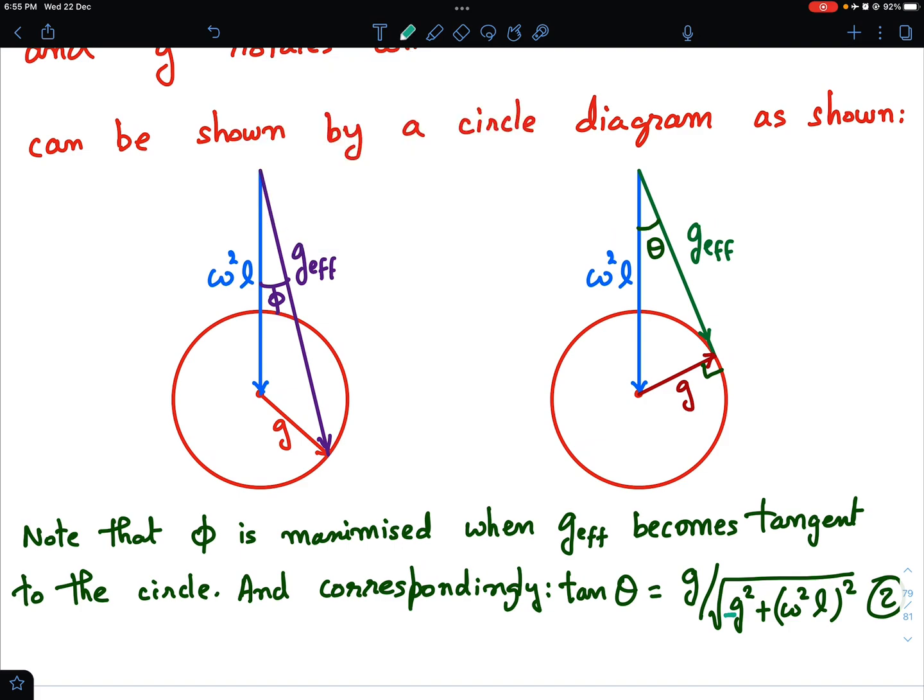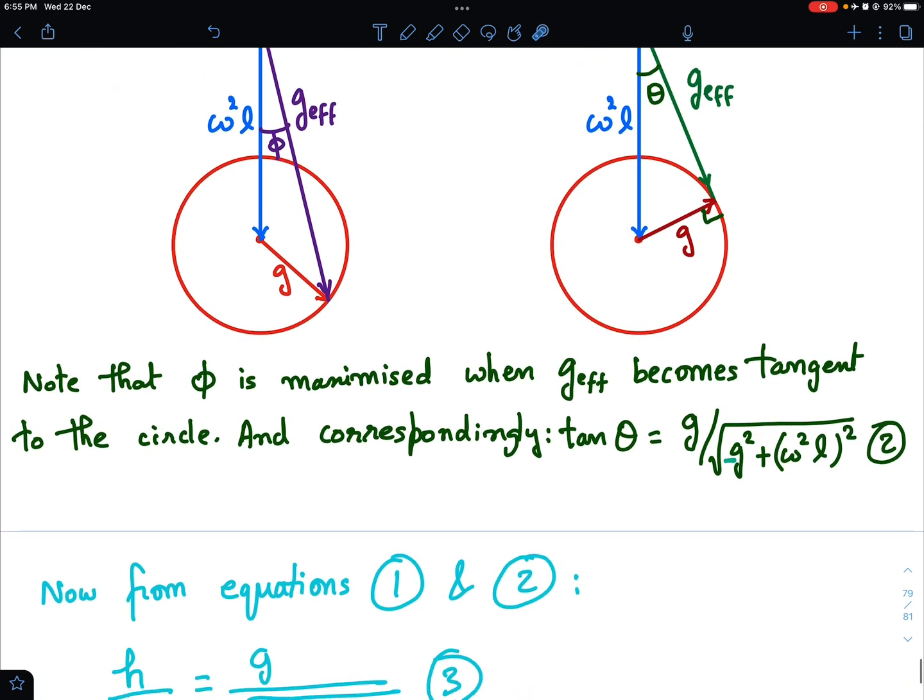This is your tan theta. Tan theta is G upon G effective and by Pythagoras theorem, you can see that.